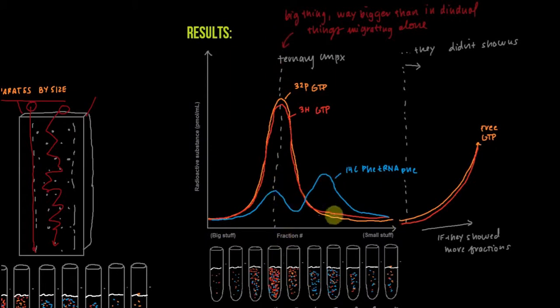And we see a little bump later in phenylalanine tRNA phenylalanine. This is just free phenylalanine tRNA phenylalanine. And if they continued on this graph, we'd see free GTP coming up in a later fraction too, because that's pretty small.